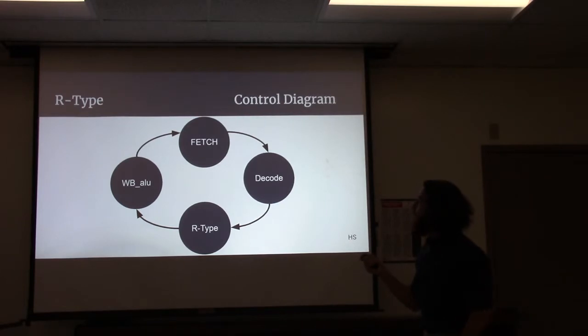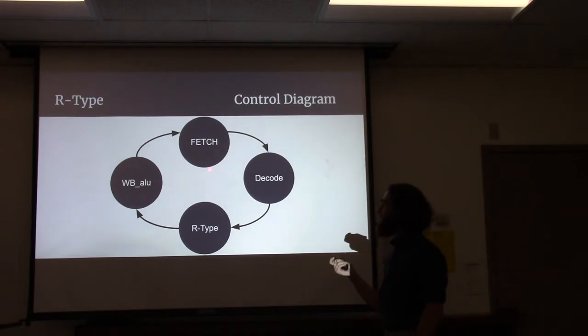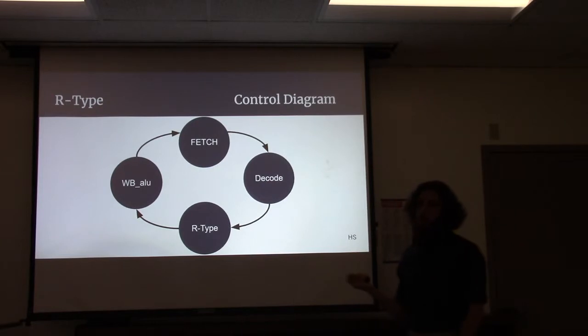So I'm going to go over the control diagrams for these instruction formats. So for the R-type, we start off in the fetch state. In this state, we fetch the instruction located at a memory address, store it in the program counter, and then we store it in the instruction register. After that, we jump to the decode state, where we decode that instruction to figure out what operation we are going to be performing. And then we have essentially the execute state, and then write back from the ALU into the register file.